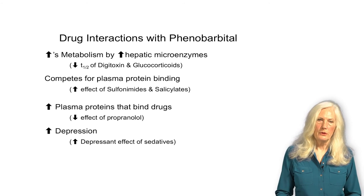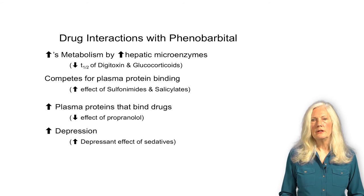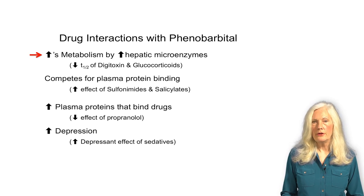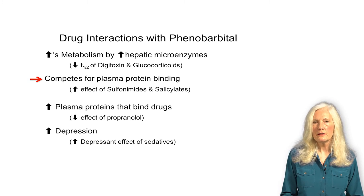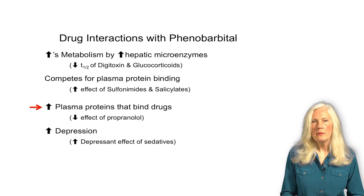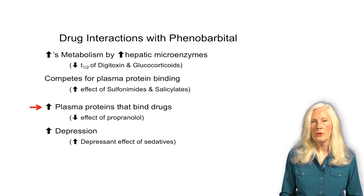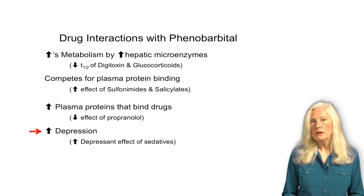There are lots of drug interactions with phenobarbital. Generally there are four ways: first, phenobarbital induces liver enzymes, increasing degradation of all other drugs metabolized by those same pathways. Second, phenobarbital competes with other drugs for binding to plasma proteins, increasing the effect of other drugs by making more available in the free unbound state. Third, phenobarbital increases the actual synthesis of proteins that bind drugs in the plasma, so over time there's a decreased effect of those drugs. Fourth, when combined with any other CNS depressant compound, there's an increased depressant effect.